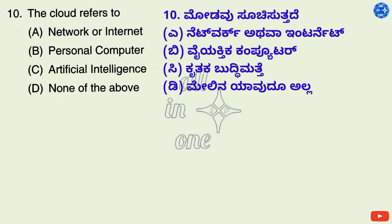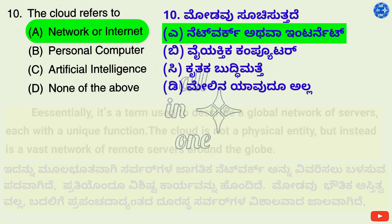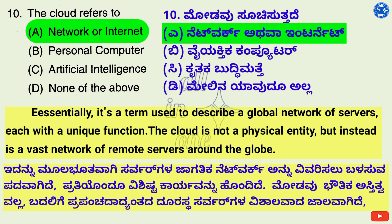Question 10. The cloud refers to — Options: A. Network or internet, B. Personal computer, C. Artificial intelligence, D. None of the above. Right answer is A: Network or internet. The definition for the cloud can seem murky, but essentially it's a term used to describe a global network of servers, each with a unique function. The cloud is not a physical entity but instead is a vast network of remote servers around the globe.